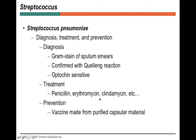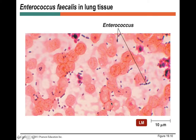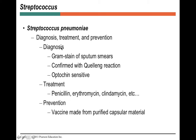Strep pneumoniae also causes pneumococcal meningitis. We can diagnose it via gram stain if done properly on a fresh specimen. On your dichotomous key, note that strep pneumoniae is sensitive to optochin — no other alpha strep are sensitive to it, so you'll see a zone of inhibition around an optochin disc. Treatment is typically penicillin; erythromycin or clindamycin can also work, as can vancomycin for gram-positive infections. For prevention, there's a vaccine called Prevnar given to premature babies and the elderly.